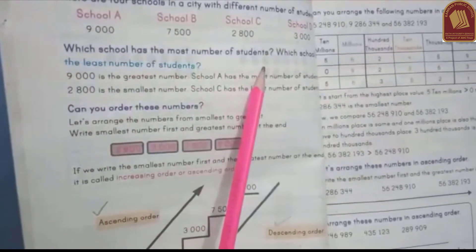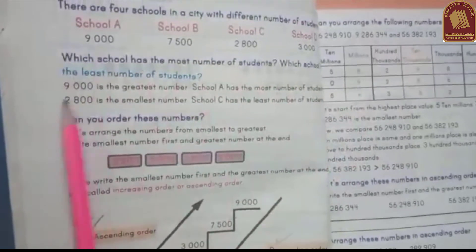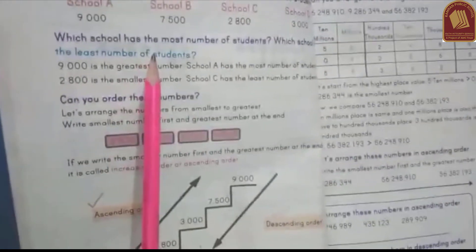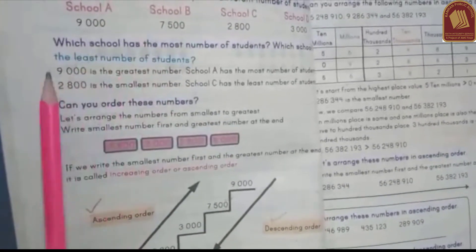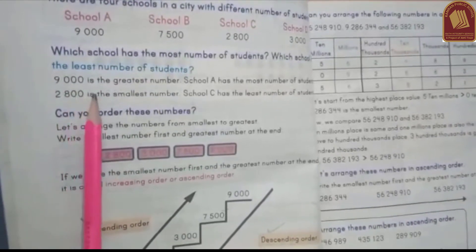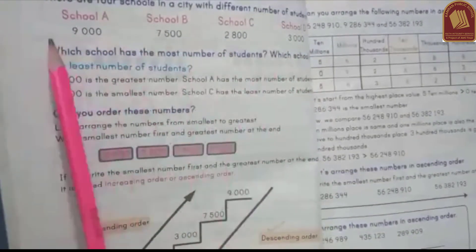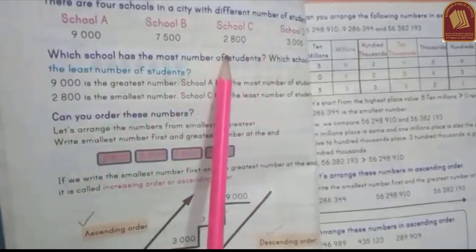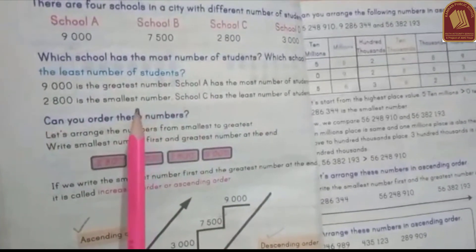हम देखेंगे which school has the most number of students — कौन से स्कूल में सबसे ज़्यादा बच्चे हैं, and which school has the least number of students — सबसे कम बच्चे कौन से स्कूल में हैं। School A में 9,000 students हैं, जो कि greatest number है, और 2,800 जो है वो smallest number है।